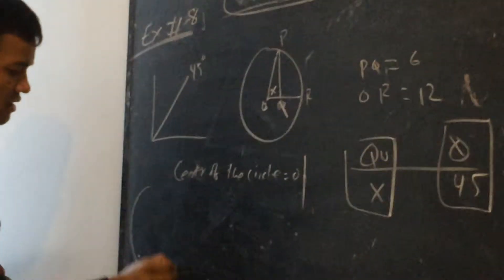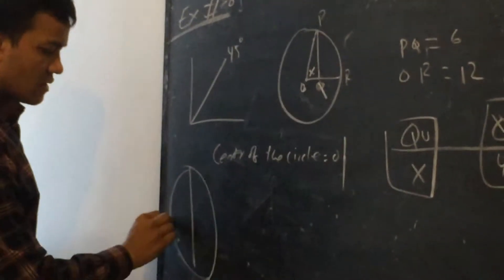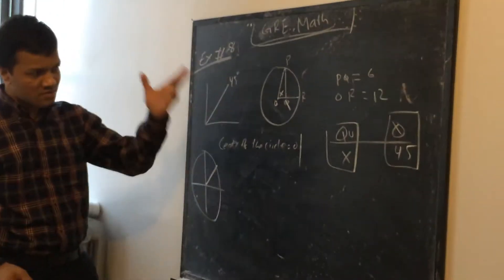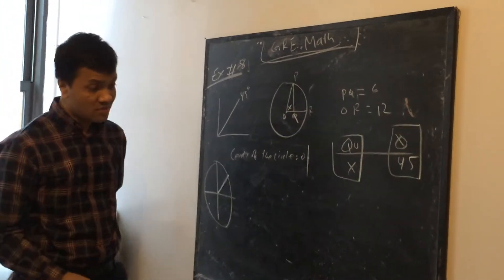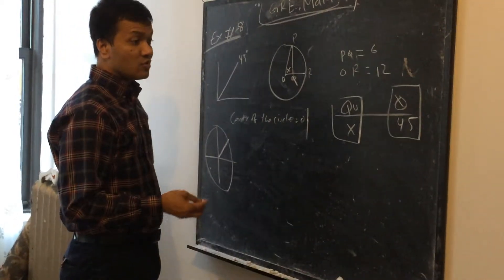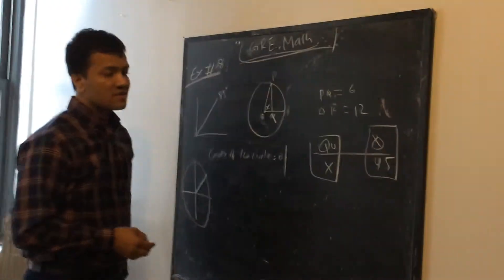Or if you draw a circle, then this angle is 45 degrees. It's asking you whether this is 45 degrees or not. It looks to me like it's more than 45 degrees, but we cannot trust our eyes. We have to check mathematically to see whether it is correct or not.